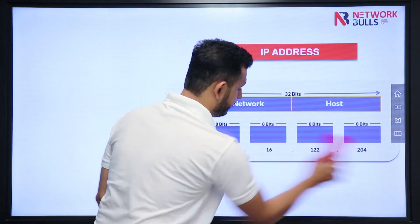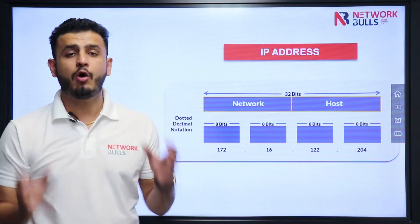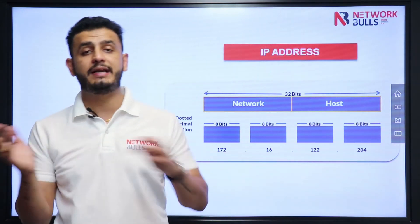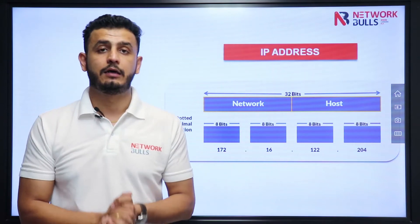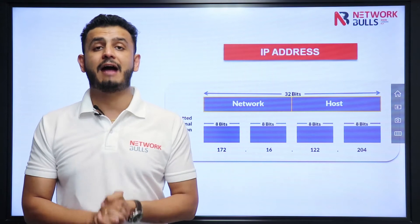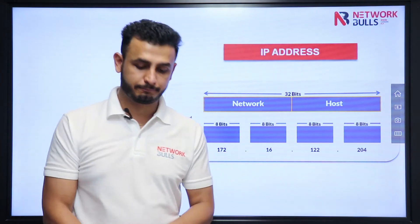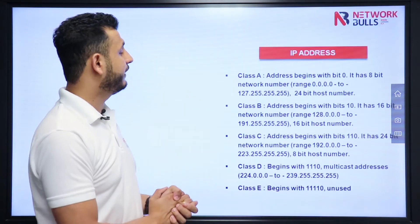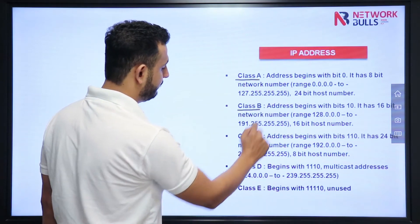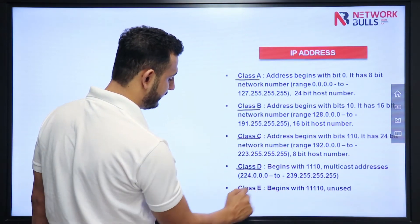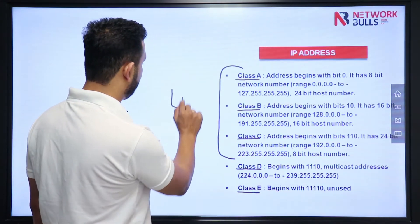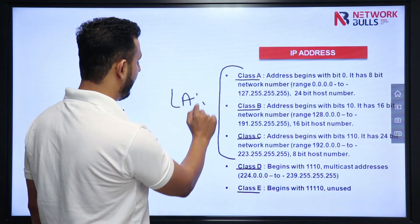The question is: how do we know how many network bits and how many host bits there will be? To answer this, we have IP address classes. IP addresses are divided into five classes: Class A, Class B, Class C, Class D, and Class E. Classes A, B, and C are used in LAN and WAN networks.